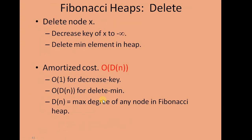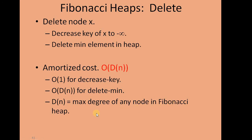The next operation on the Fibonacci Heap is the delete key operation. To perform a delete key, we must know two operations: decrease key and delete-min. The idea is to decrease the key of x to minus infinity, which brings it to the root list as the minimum element, and then we delete the minimum element from the Fibonacci Heap. The cost of decrease key is O(1) and the cost of delete-min is O(t(n)), where t(n) is the maximum degree of any node in the Fibonacci Heap.